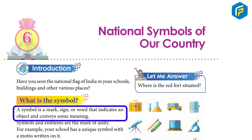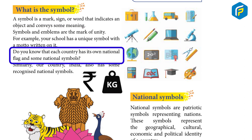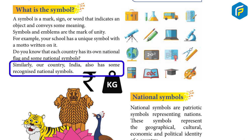A symbol is a mark, sign or word that indicates an object and conveys some meaning. Symbols and emblems are the mark of unity. For example, your school has a unique symbol with a motto written on it. Each country has its own national flag and some national symbols. Similarly, our country India also has some recognized national symbols.